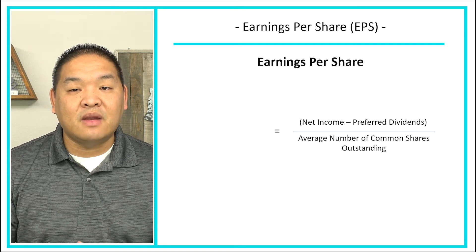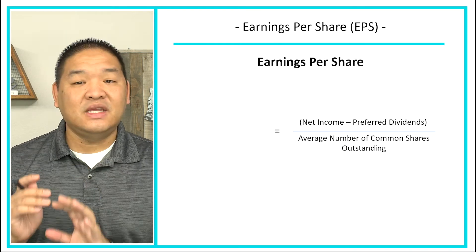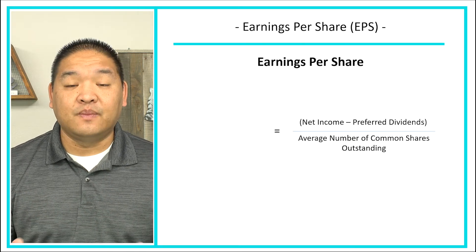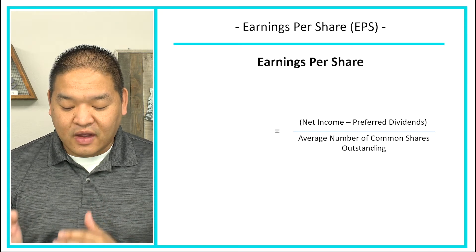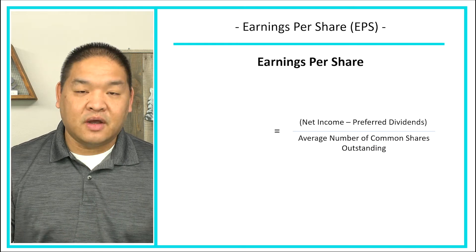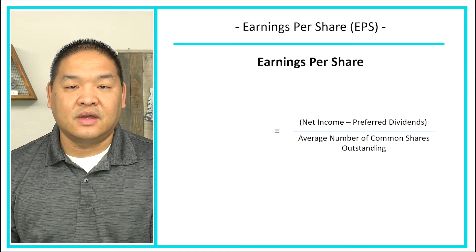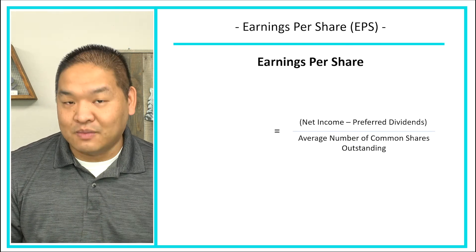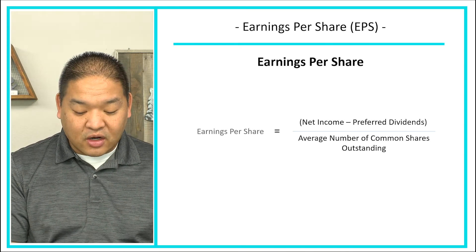We then divide by the average number of common shares outstanding. To keep it simple, we take the beginning shares plus the ending shares and divide by two. The actual weighted average method calculates based on time, which gets more complex and is beyond the scope of this lesson. We'll use the simpler method — dividing by two — which gives us our EPS.